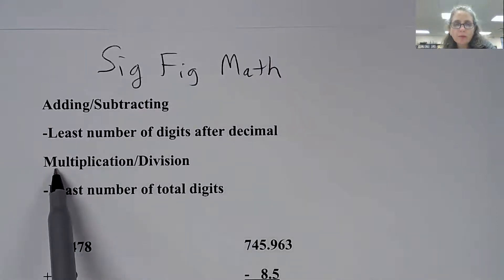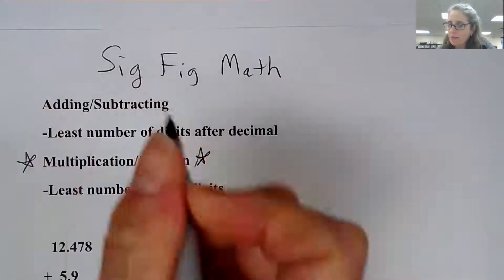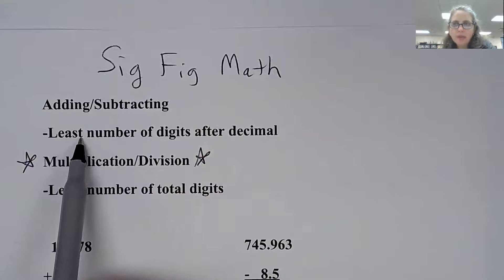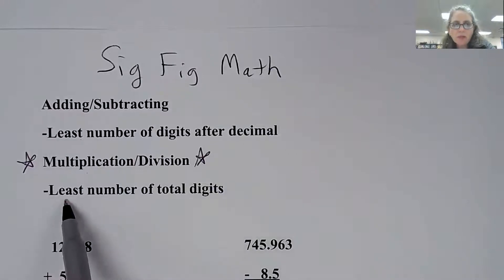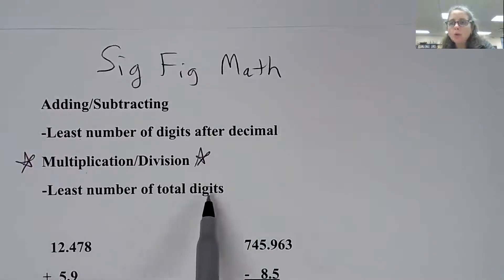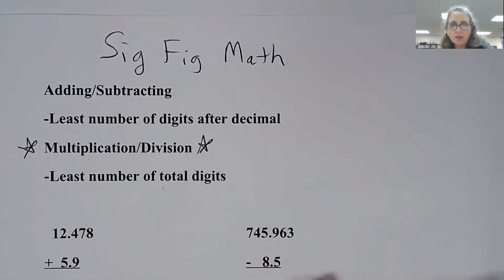The second rule is for multiplication and division. Now this is, of course, the one we do most often in here. Yes, we will add numbers together and subtract them, but in reality, it's going to be multiplication and division that we use the most. So it is the least number of total digits. These are two separate rules. So when we start to do the math, you're going to have to keep them separate in your head.